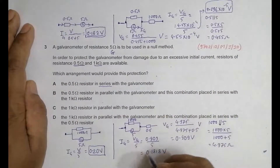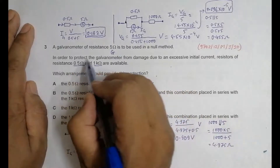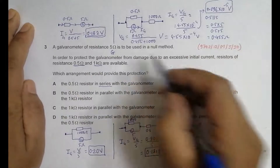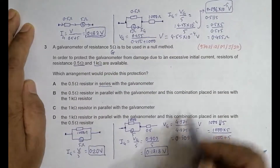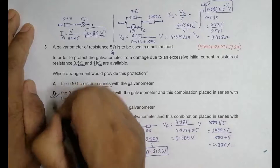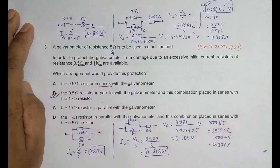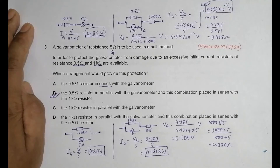The galvanometer will be safest when the current through it is the least. Comparing all four choices — A: 0.182V, B: 9.09 × 10⁻⁵ V, C: 0.20V, D: 0.1818V — choice B gives by far the smallest current. Therefore choice B is the correct answer. This was the first question I tried from the 2020 exam, which was cancelled due to the COVID-19 pandemic, and it turned out to be quite rigorous.